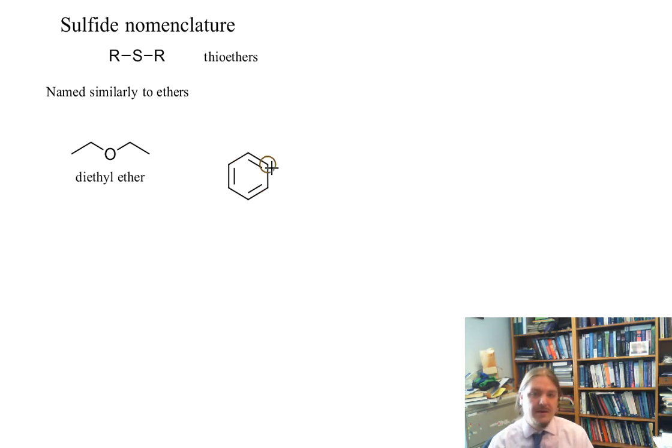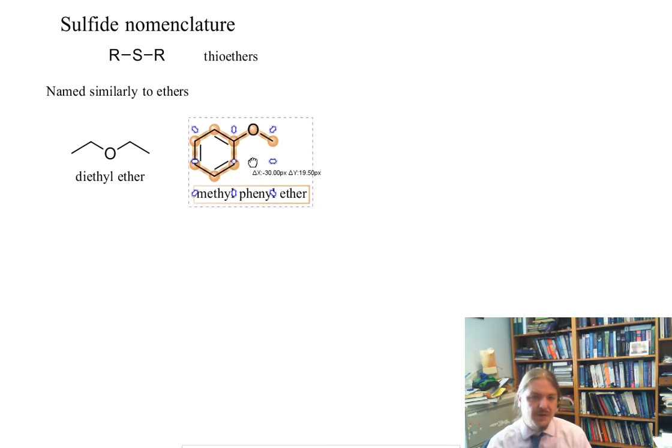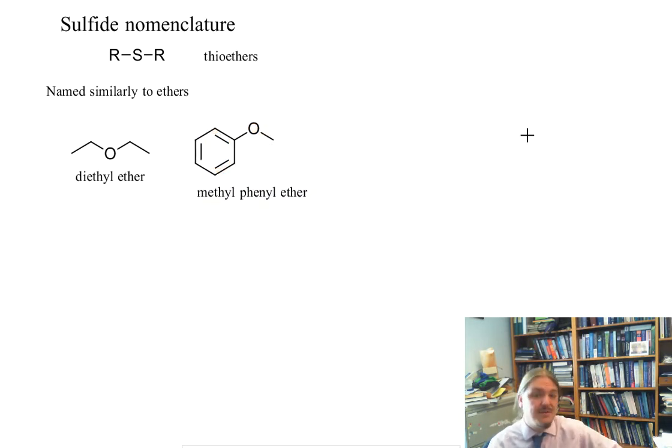And if they are not symmetric, if they have two different hydrocarbon groups, then we can name that, usually putting them in alphabetical order. So this is methylphenyl ether. And methylphenyl ether has another common name, anisole. But at least according to this nomenclature, this is how we do it.